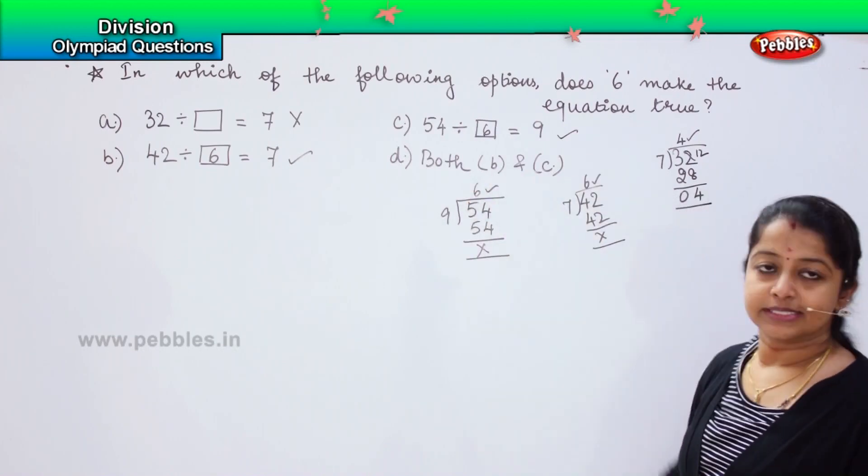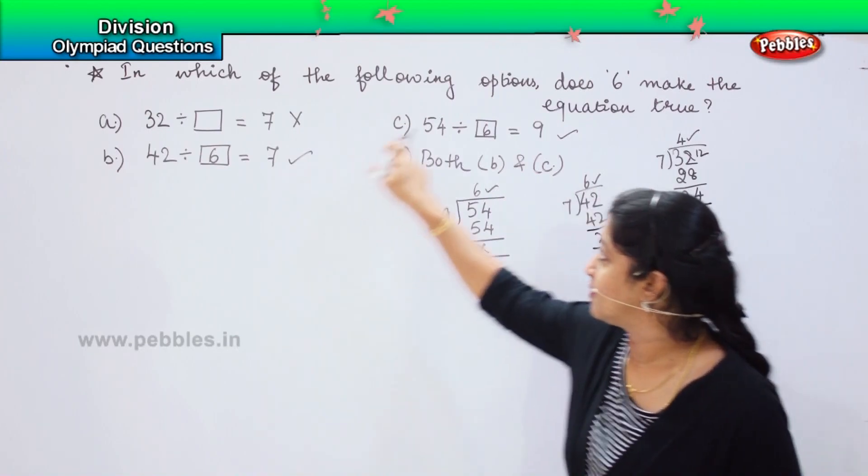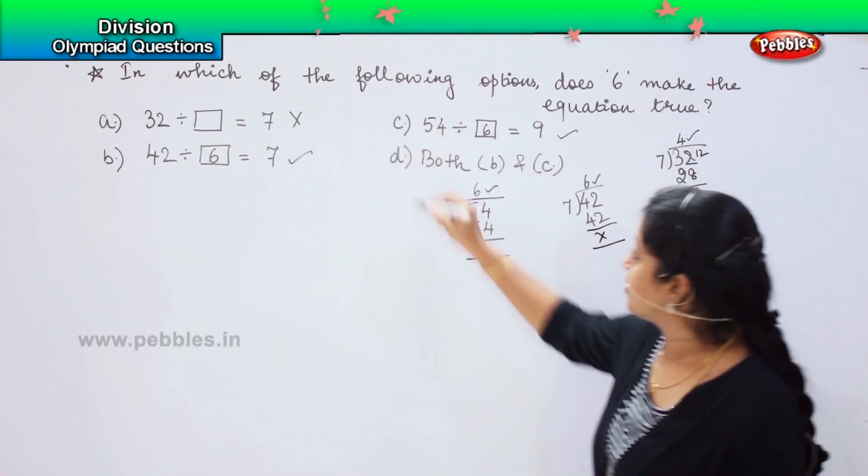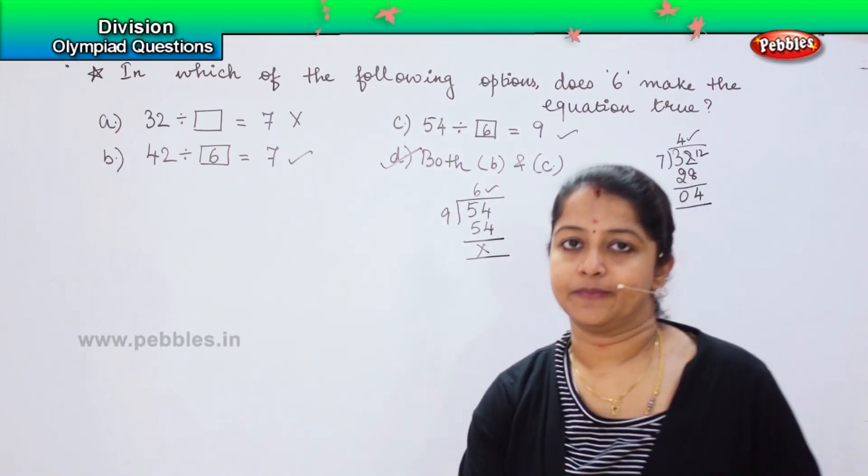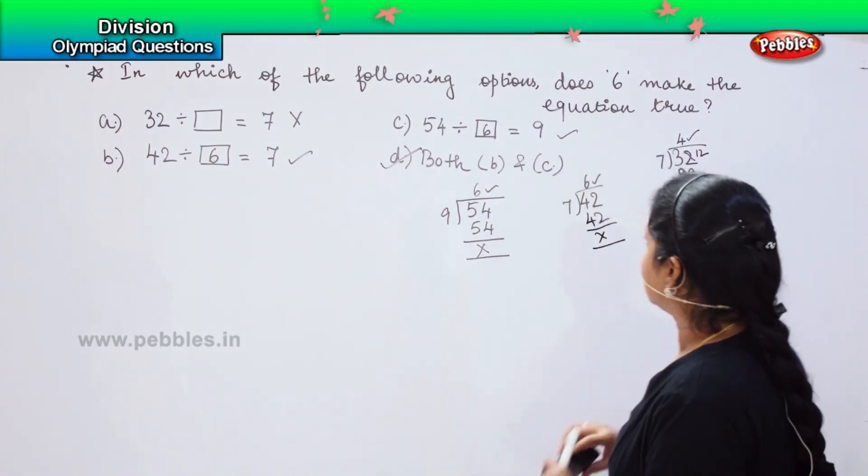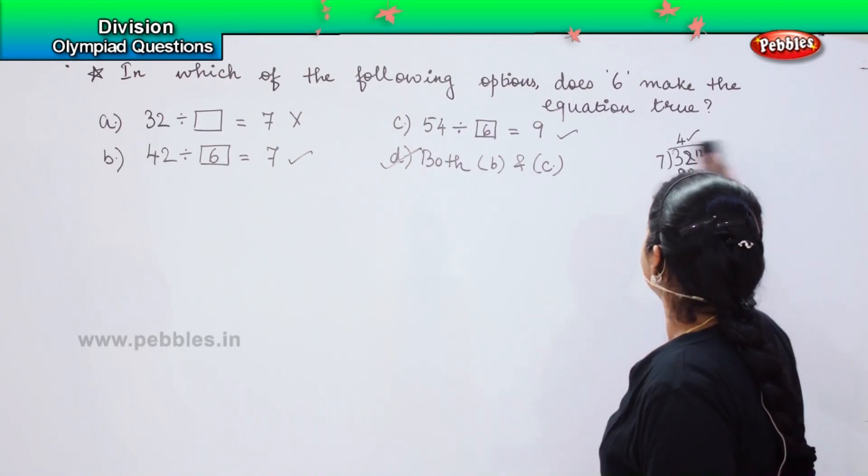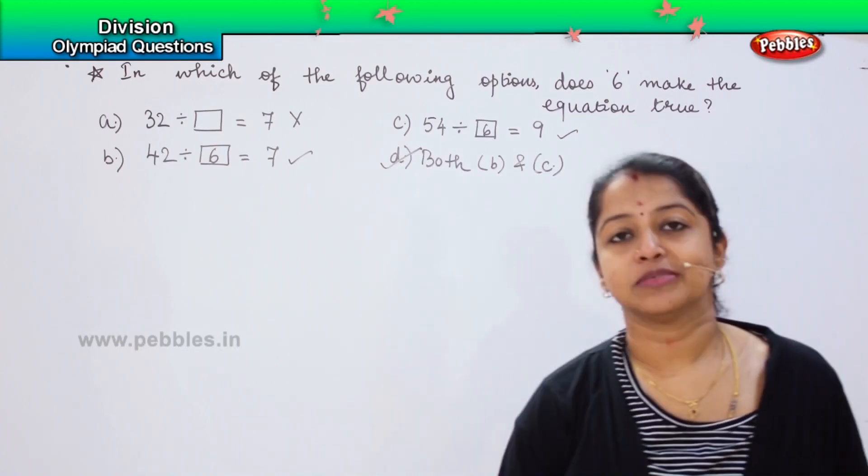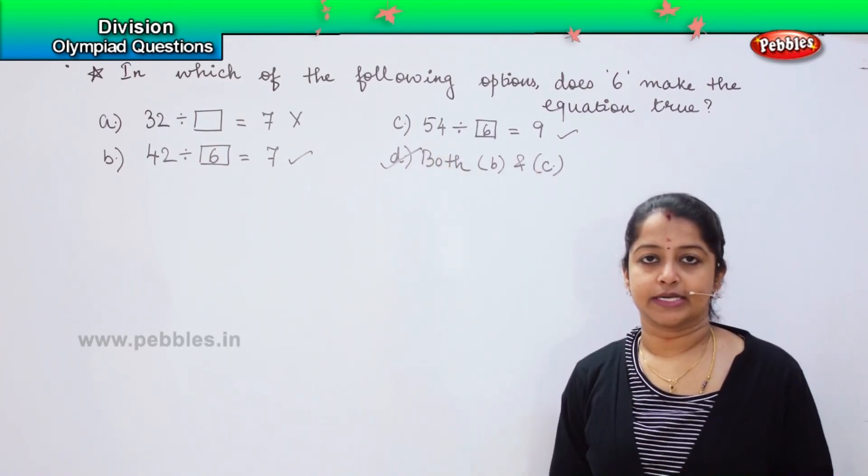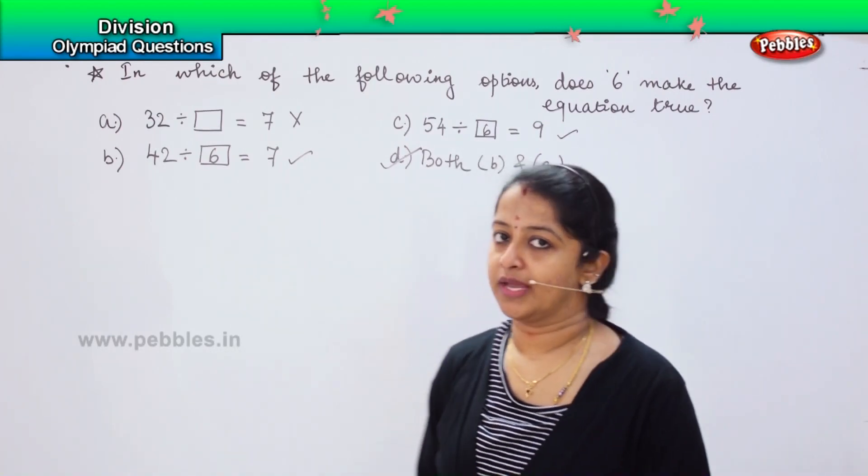Both B and C. Which means that this equation stands true both for option B and for option C. My right answer will be both B and C. Did you understand it? These type of questions whenever you get it, you have to solve all the given options and then only you can come to a conclusion because sometimes it may happen that there may be two options correct. Shall we proceed further?